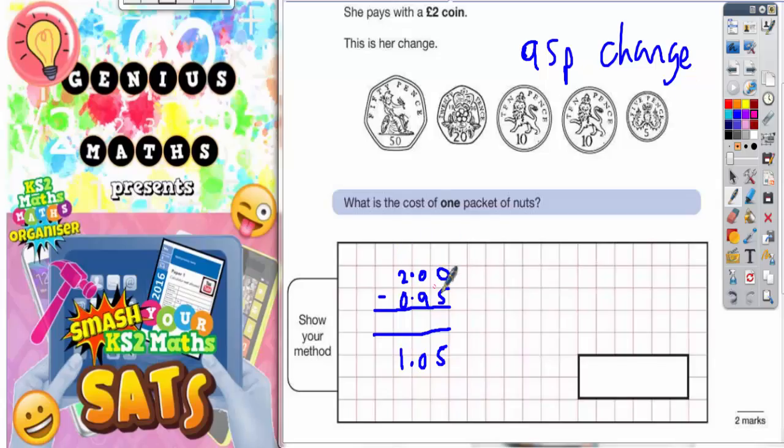So zero take away five, you can't do. You need to borrow one, but the next column is zero and you can't borrow from zero. So you need to borrow from the two which makes it one, and the one you borrowed makes this zero into ten. But that's still no good because you still can't do zero take away five. So now you need to borrow from the ten which makes that into a nine, and the one you borrowed makes this into a ten. So now you can do it. Ten take away five is five, nine take away nine is nothing, and one take away nothing is one.